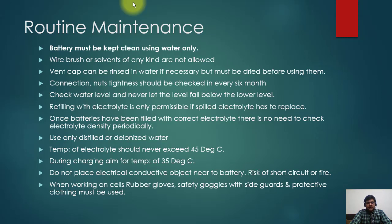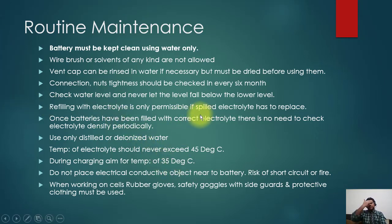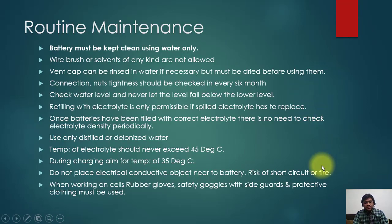Use only distilled or deionized water. The temperature of the electrolyte should never exceed 45 degrees Celsius. During charging, aim for a temperature of 35 degrees Celsius. Do not place any electrically conductive object near the battery due to risk of short circuit or fire. When working on cells, rubber gloves, safety goggles with side guards, and protective clothing must be used. This concludes the routine maintenance overview for gas batteries as a practical example.